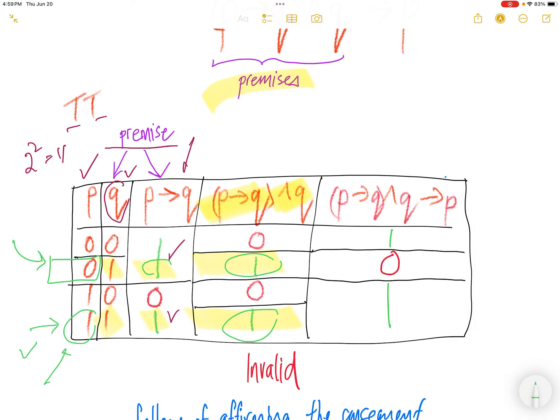But for this one, we have a problem. Because the premise is true and this is true, and then you get a false.